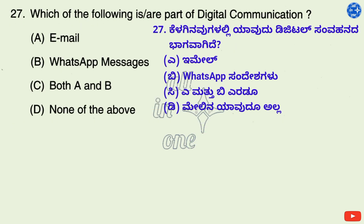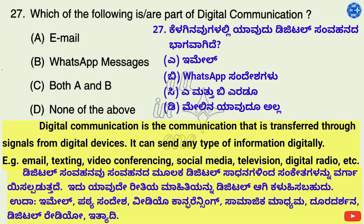Question 27. Which of the following is/are part of digital communication? Options: A. Email, B. WhatsApp messages, C. Both A and B, D. None of the above. Digital communication is communication transferred through signals from digital devices. It can send any type of information digitally — examples include email, texting, video conferencing, social media, television, digital radio, etc. Therefore, right option is C: Both A and B.